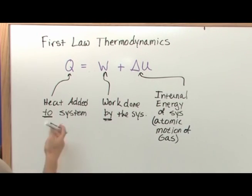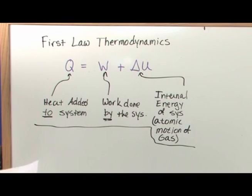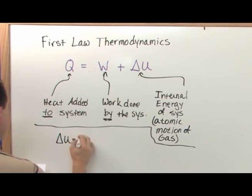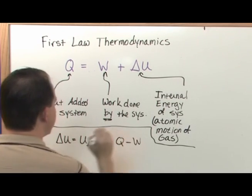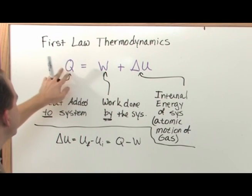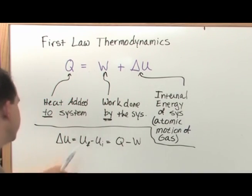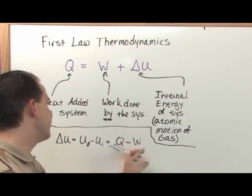Now in your books, depending on what book you have, I just want to point out, most of the time in your books you probably will not see it written down like this. Most of the time they'll write it like this. Delta U is equal to UF minus UI. Final value minus initial is equal to Q minus W. So all they do is they take the W, subtract from both sides. Q minus W is equal to delta U. This is how you see it in a lot of the books. Delta U is equal to Q minus W.